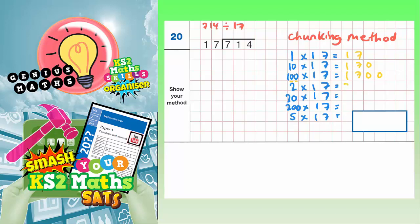2 17s, well, double 17 is 34. So 20 17s is the same as 2 17s but with a 0, so that's 340. 200 17s is the same as 2 17s but with 2 0s, so that's 3,400.